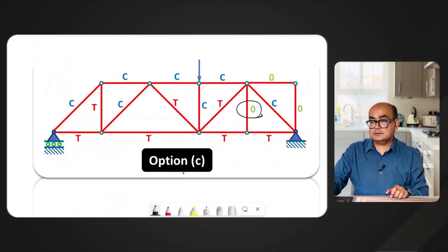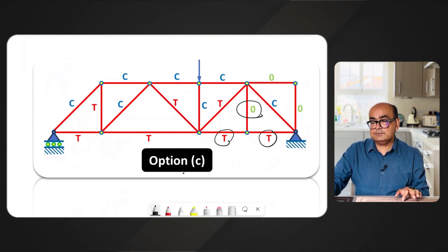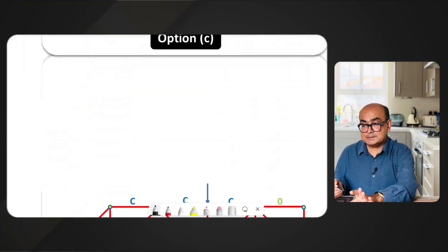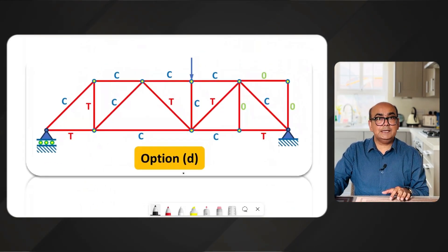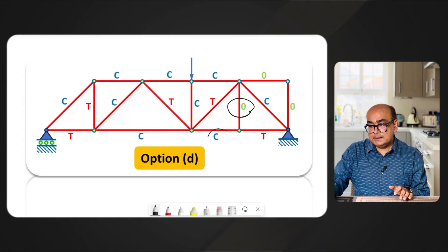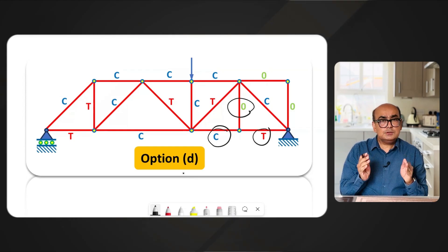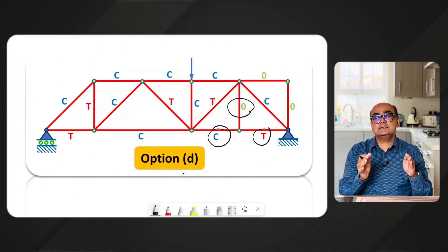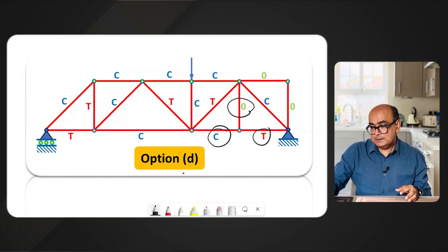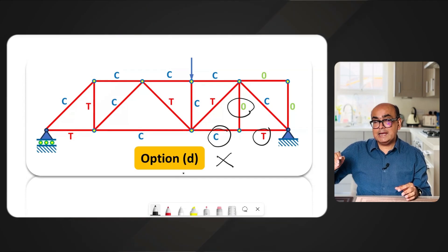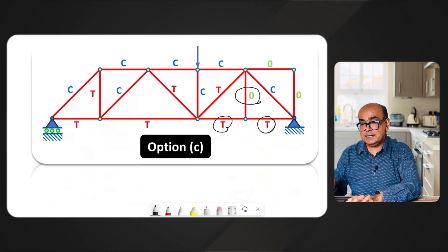Option C at least passes this check — we have a zero force member here, and we have tension on the left and tension on the right, so it passes. Looking at option D, we have zero force in the vertical member, but in this collinear member we have two different forces, which is not possible since collinear members must have the same forces. That makes option D incorrect as well.